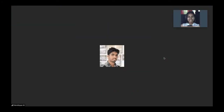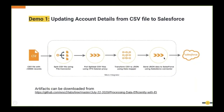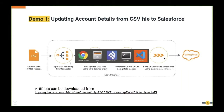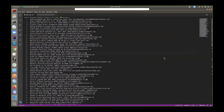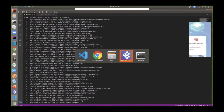In Demo 1, the use case is reading account details from a CSV file and updating them to Salesforce. Imagine a scenario with a large CSV file containing account details — company names, phone numbers, etc. — that need to be sent to Salesforce. Because the file is large, we can't load everything at once, so we split it into smaller chunks and process them one by one.